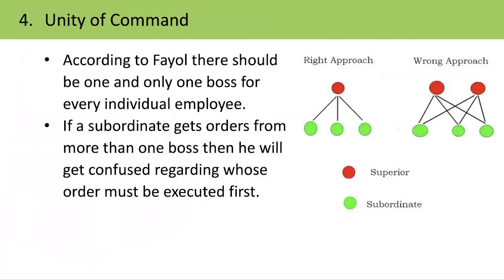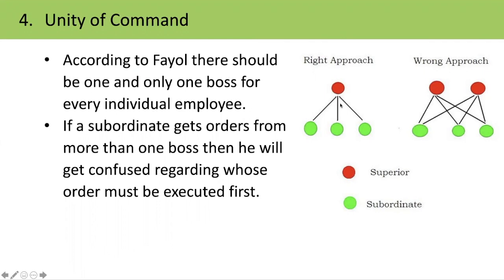The next principle is Unity of Command. According to this principle, employees should receive orders from one boss only. If they receive orders from more than one boss, they will get confused. Subordinates should receive orders from only one superior — that is the right approach. The wrong approach is receiving orders from more than one boss, which causes confusion. Like a student told by two teachers to do different tasks will get confused; similarly, employees receiving orders from multiple bosses face confusion and ego clashes.